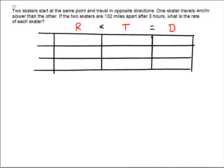Two skaters start at the same point and travel in opposite directions. One skater travels 4 miles an hour slower than the other, and if the two skaters are 132 miles apart after 3 hours, what is the rate of each skater? Okay, so we have two rates here. We have a skater 1, skater 2, and then we have what I always refer to as the total, in case we need to know the total. We'll use the total. It won't always be useful in all the columns, but maybe. I'm going to change my colors here. I'm going to make this one blue and this one green, just for organizational effect.